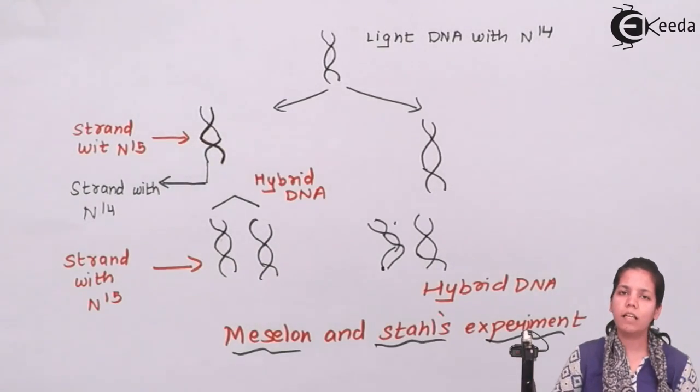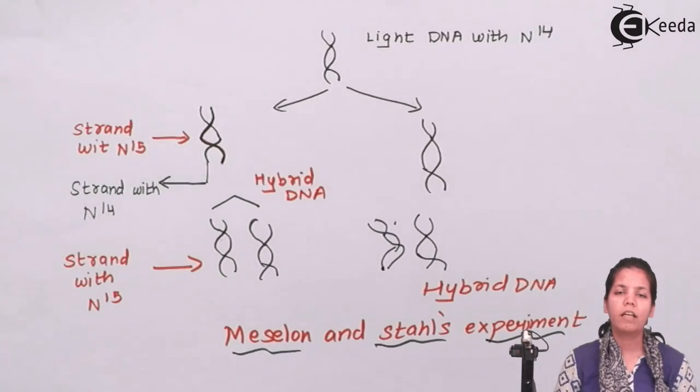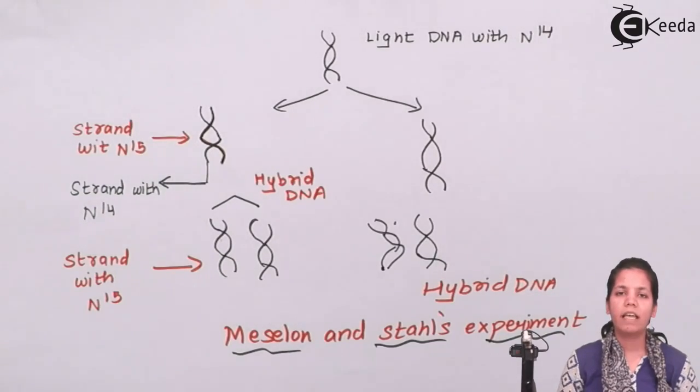If I have to summate this or sum up this in one sentence, I could say this: Meselson and Stahl's experiment proved that DNA was semi-conservative. One strand of DNA had one part that is old parental part and one part which is the newly formed part. I hope you all are clear about this Meselson and Stahl's experiment. Thank you.